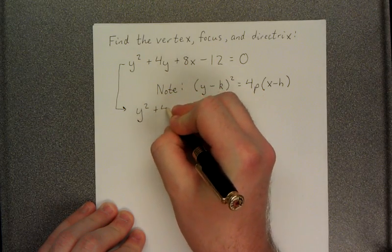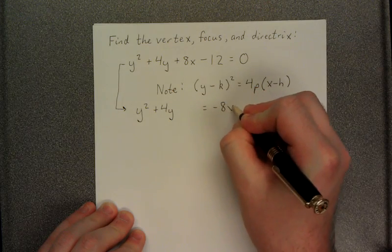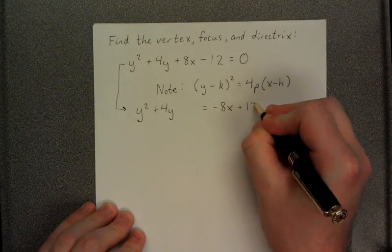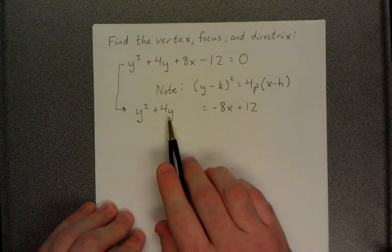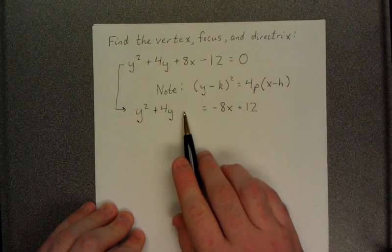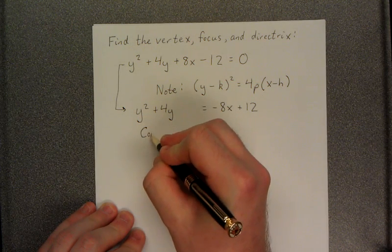We can accomplish this by subtracting 8x and adding 12 to both sides of the equation. Next, on the left-hand side, we'll notice that there is a square that needs to be completed. So we'll go through the process of completing the square.